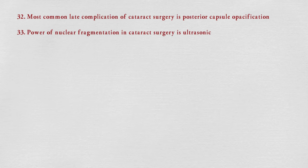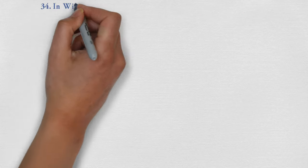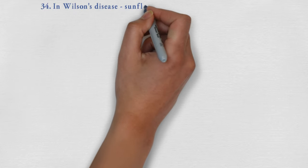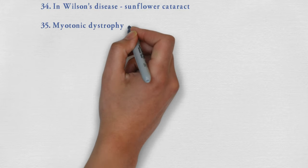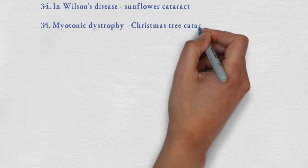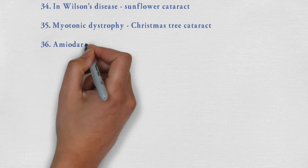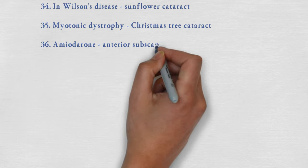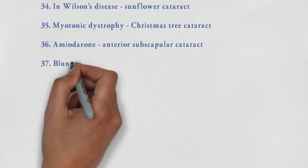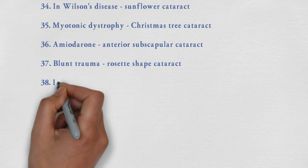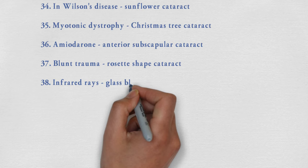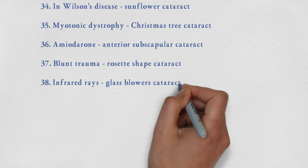Now let's move toward cataract — cataract may be caused by different types of diseases. In Wilson's disease there is sunflower cataract. In myotonic dystrophy there is Christmas tree cataract. Due to amiodarone there is anterior subcapsular cataract. Due to blunt trauma there is rosette-shaped cataract. Infrared rays cause glass-blower's cataract.